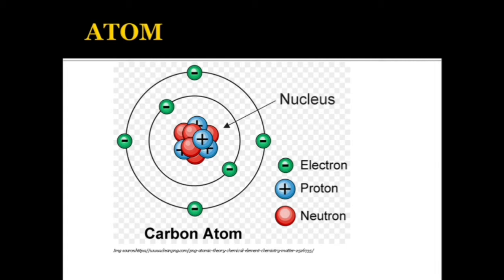Basically, an atom is made up of two parts. The first part is the nucleus and the second part is the extra nucleus. In the nucleus, there are protons and neutrons.